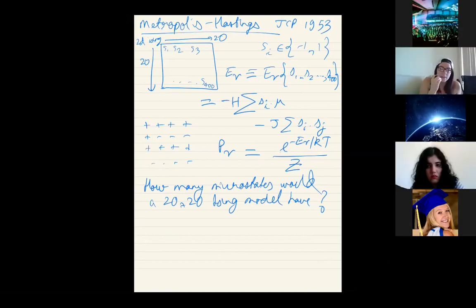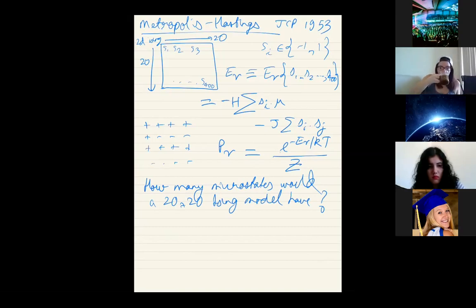Logan answered: 2^400 microstates. That's a huge number. Two to the power of 400, which is approximately 2^3 to the power of 133 — essentially larger than 10^100. It's Avogadro's number of Avogadro's number of Avogadro's number of configurations that you can have in order to calculate the partition function.